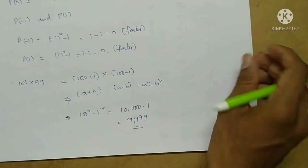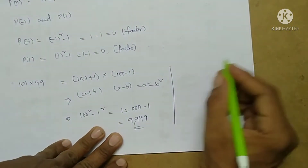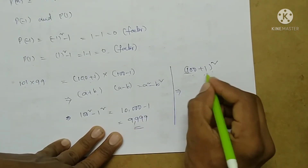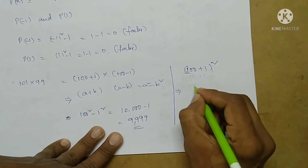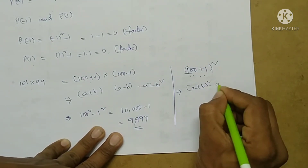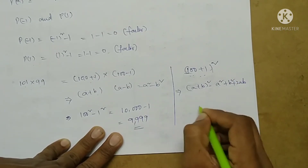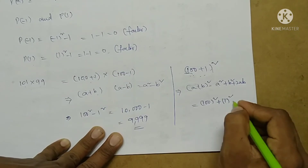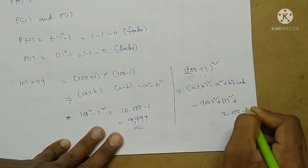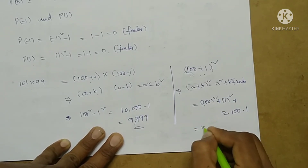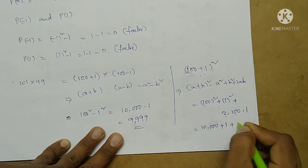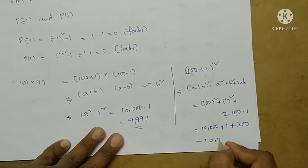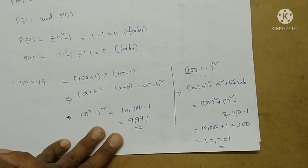Take another example: 101 whole square, which is 100 plus 1 whole square. This is of the form A plus B whole square, whose result is A square plus B square plus 2AB. Here A equals 100, B equals 1. So 100 square plus 1 square plus 2 into 100 into 1 equals 10,000 plus 1 plus 200, giving the final result 10,201.